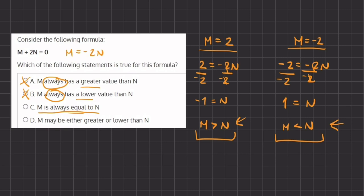And that means that d is going to be our final answer, which states that m may be greater or lower than n, and that is exactly what is represented in both of our examples, and therefore d will be our final answer.